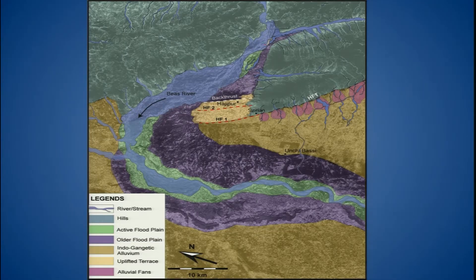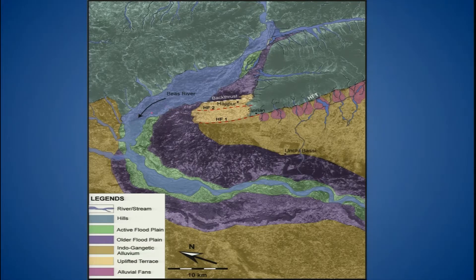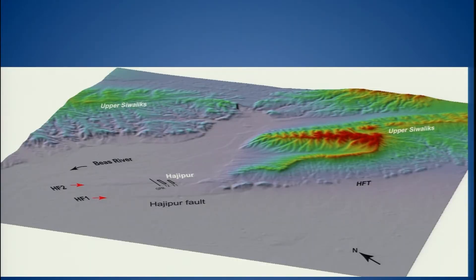This is the sketch of the geomorphic map which we have prepared, which shows that the Bias river is present. This is the present day channel and this is the paleo floodplain — the Bias used to flow through this earlier and then slowly it moved further northwest. After doing the tectonic geomorphology part, we started looking at a detailed topography of the active fault. This is the shaded relief map which shows the young topography of the active fault displacing very young deposits of the Bias river.